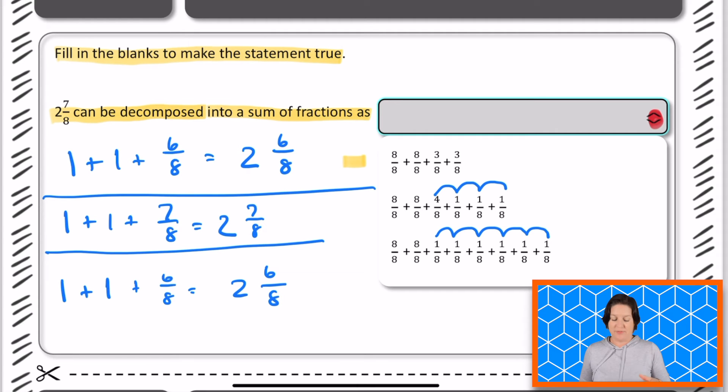Again, not quite two and seven eighths. So our correct answer, let's make it official, would be this middle one right here. Okay, so you would select that one on your test. That's how you rock this one.